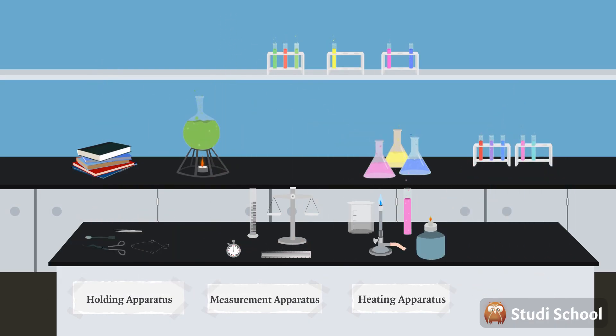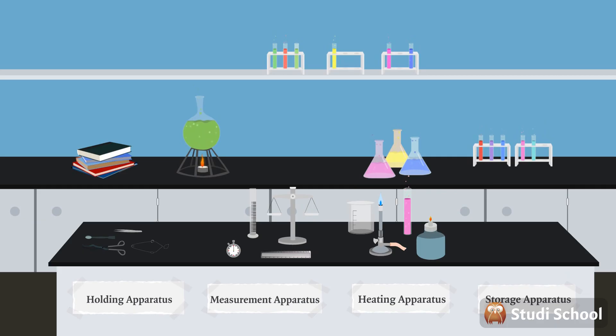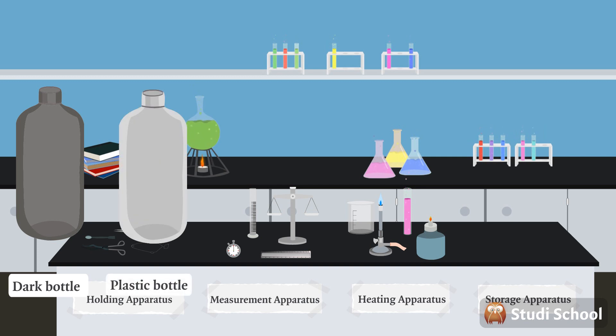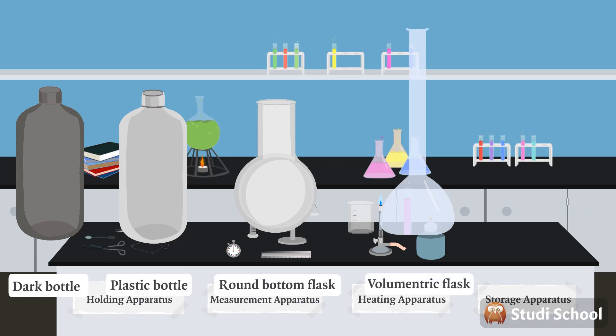Finally, we have apparatus for storing things. These would include dark bottles to store light-sensitive chemicals in, plastic bottles for solid and powdered chemicals, round-bottomed flasks, volumetric flasks, and flat-bottomed flasks.